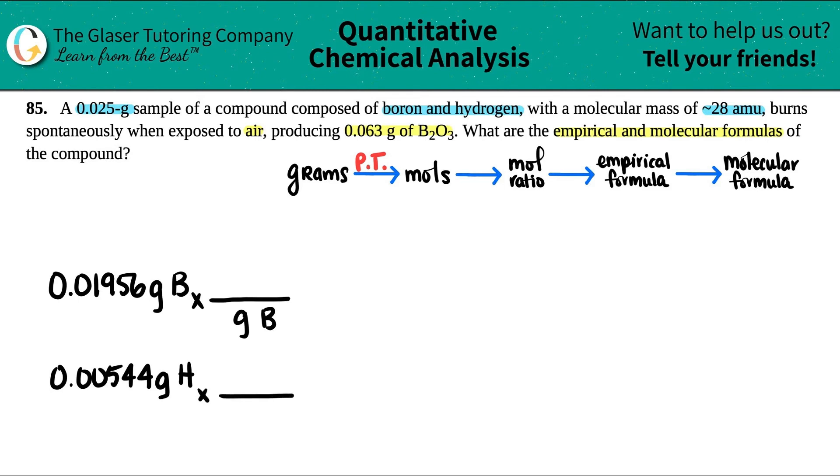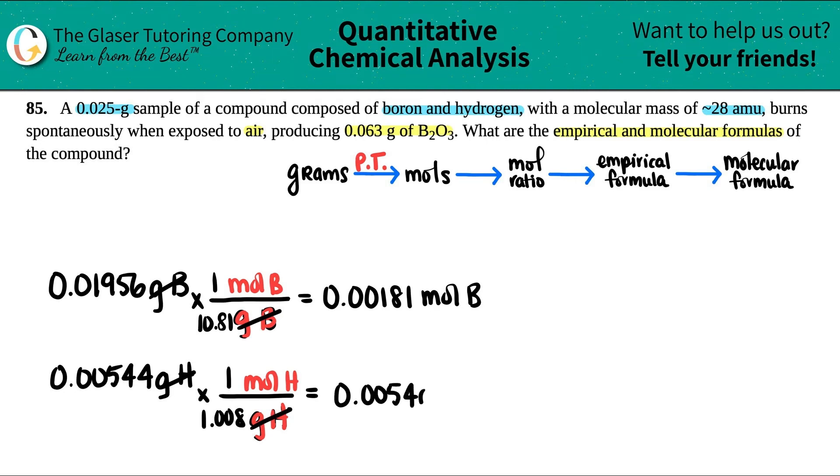I do it for both of them at once. It's easier that way for empirical formulas. So grams of boron, grams of hydrogen go on the bottom because you want to cancel out those units. We'll put mole of boron and then mole of hydrogen. Periodic table - one mole of boron, one mole of hydrogen equals the weight on the periodic table. Boron is 10.81, hydrogen is 1.008. I'm just going to cancel out the units that I don't want. 0.01956 divided by 10.81, I get roughly 0.00181 mole of boron. And then 0.00544 divided by 1.008, I get roughly 0.00540 mole of hydrogen.